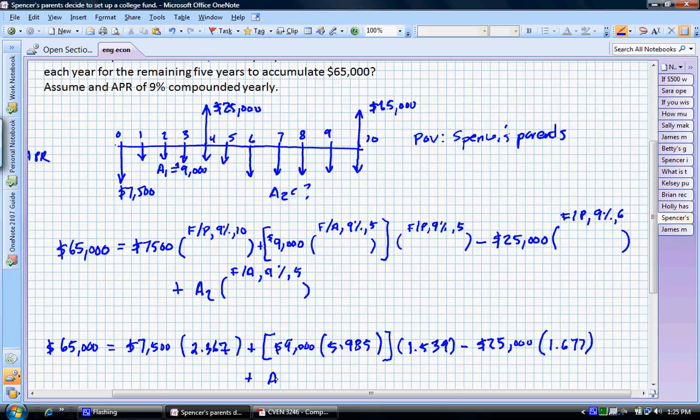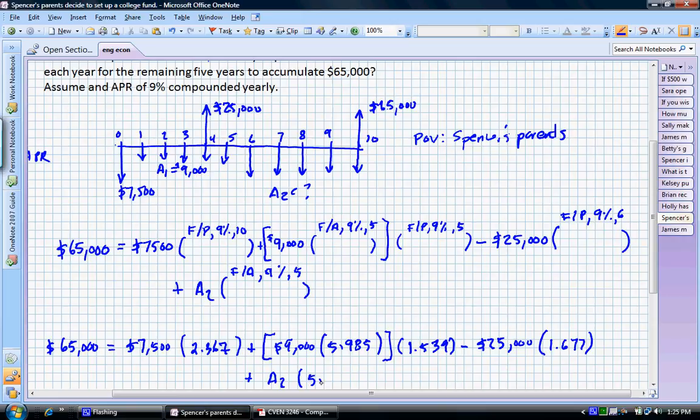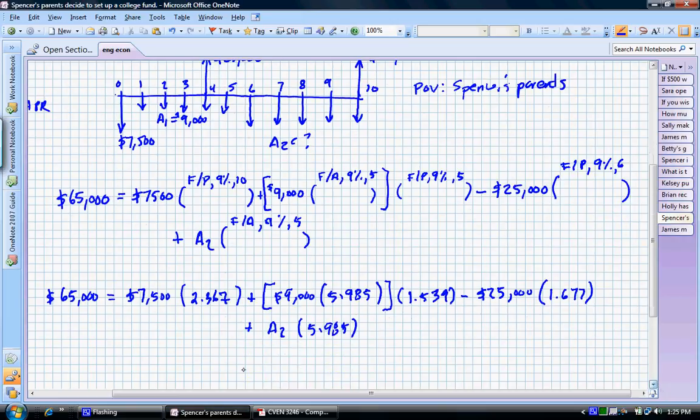And then finally, we're going to add A2 multiplied by the F/A factor, 9% and 5. So the F/A factor, 9% and 5. That's 5.985 again. If we scroll down and we solve for A2 in this equation, which is relatively easy, we know we have $1,048.33.